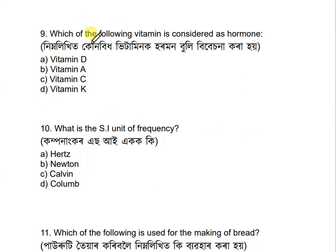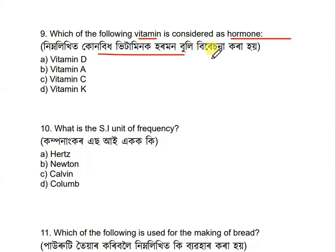Question 9: Which of the following vitamins is considered as a hormone? The answer is vitamin D. Vitamin D can be called a hormone because of its effects on our body. Vitamins A, C, and K are not considered hormones.